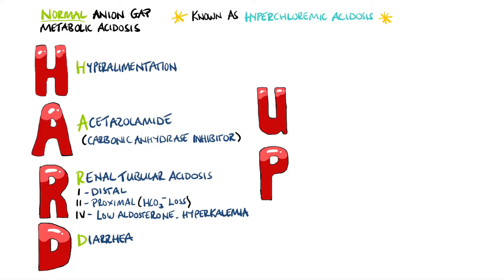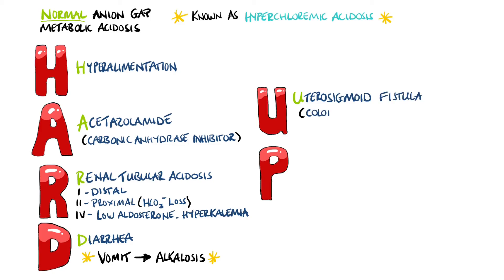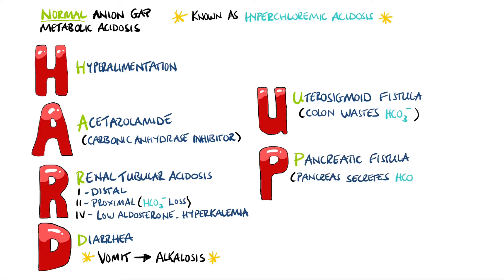Remember that in diarrhea you lose bicarb, and in vomiting you're losing acid, so you end up going towards alkalosis rather than acidosis. U and P both involve fistulas. U stands for uterosigmoid fistula, which causes the colon to waste bicarbonate, and P stands for pancreatic fistula, because the pancreas secretes bicarbonate-rich fluid.